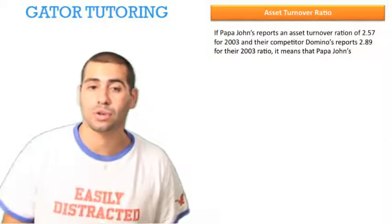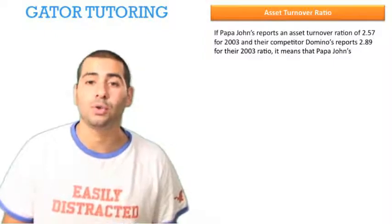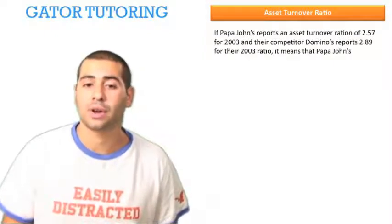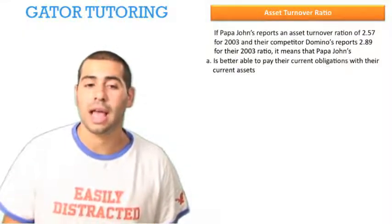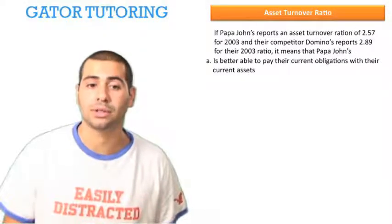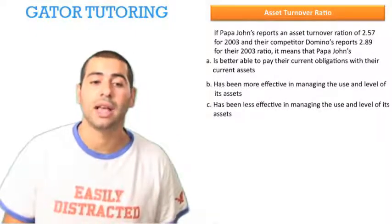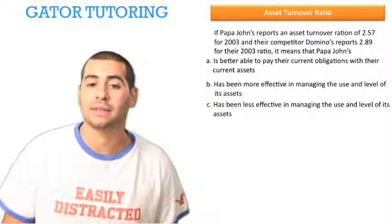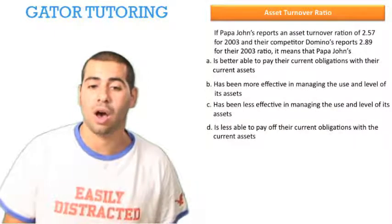If Papa John's reports an asset turnover ratio of 2.57 for 2003 and their competitor Domino's reports 2.89 for their 2003 ratio, it means that Papa John's: A) is better able to pay their current obligations with their current assets, B) has been more effective in managing the use and level of its assets, C) has been less effective in managing the use and level of its assets, D) is less able to pay off their current obligations with their current assets.